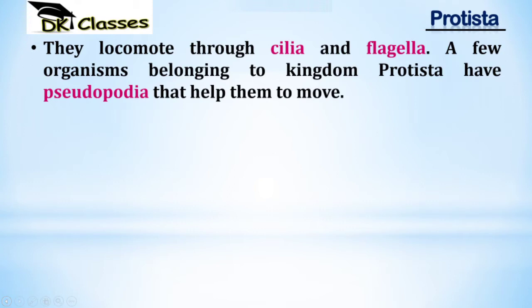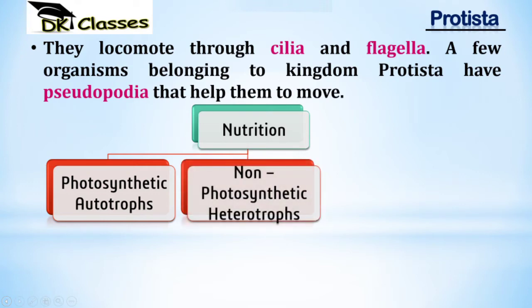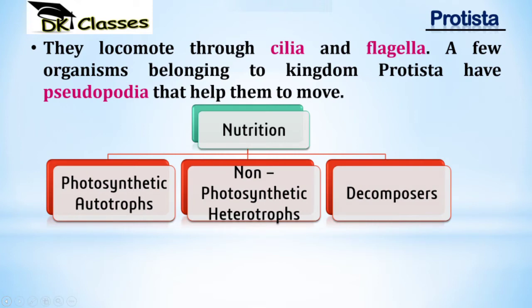Regarding nutrition, Protista can be photosynthetic autotrophs, non-photosynthetic heterotrophs, or decomposers. Photosynthetic autotrophs are the chief producers — organisms that can make their own food. Even though kelp resembles plants, it is Protista; algae can make food in the presence of sunlight, acting as autotrophs.